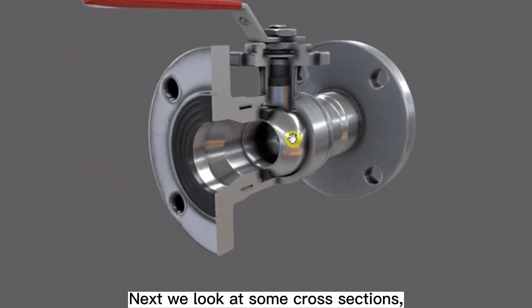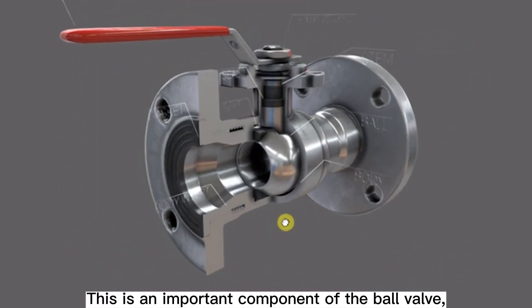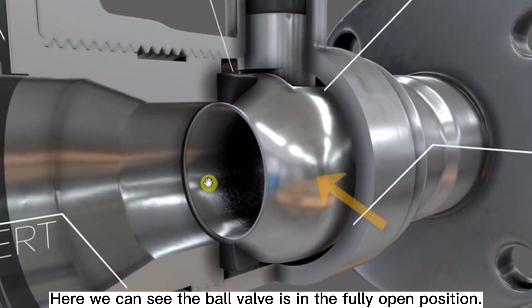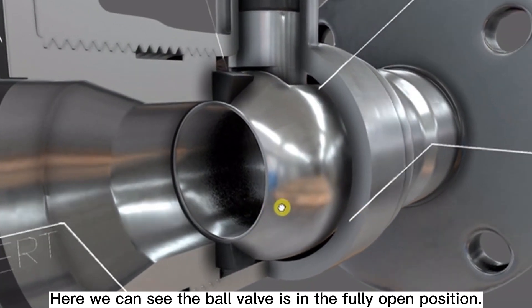Next, we look at some cross sections. This is an important component of the ball valve. Here we can see the ball valve is in the fully open position.